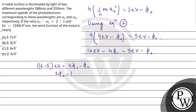Therefore φ₀ equals 11/3 electron volt, which is equal to 3.7 electron volt. So our final answer is option A: 3.7 electron volt. I hope you understood it well. Best of luck.